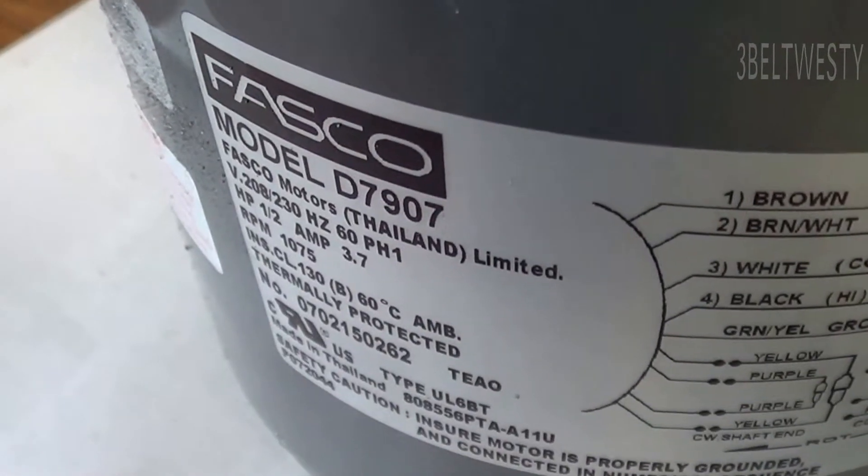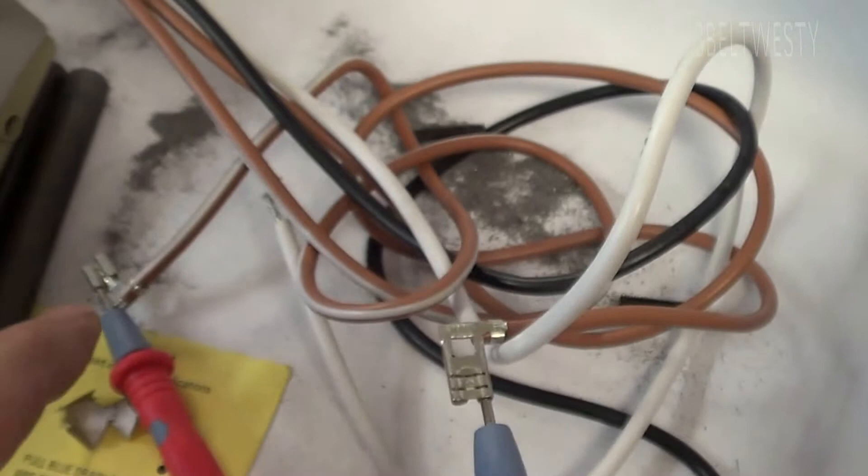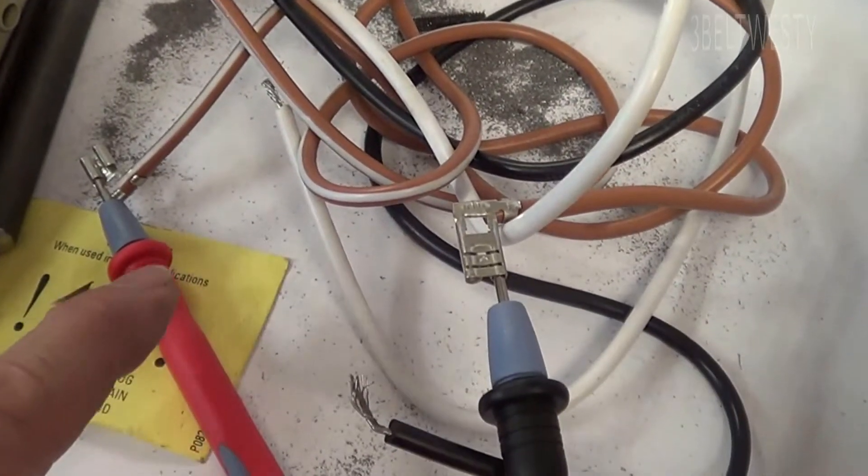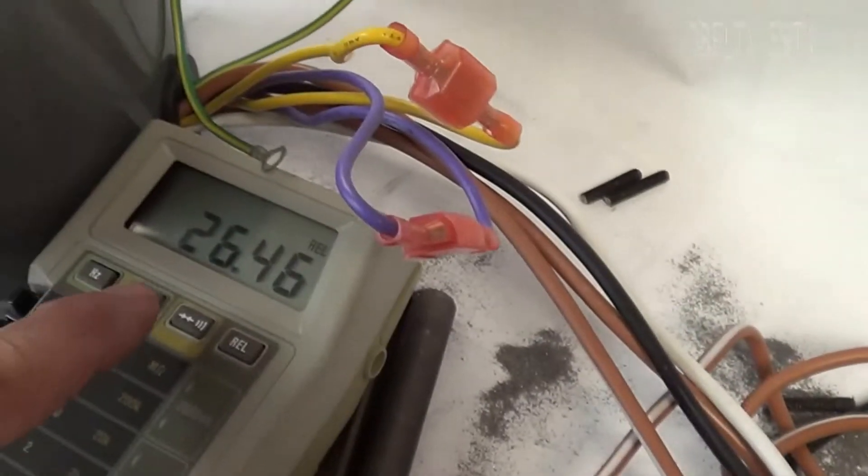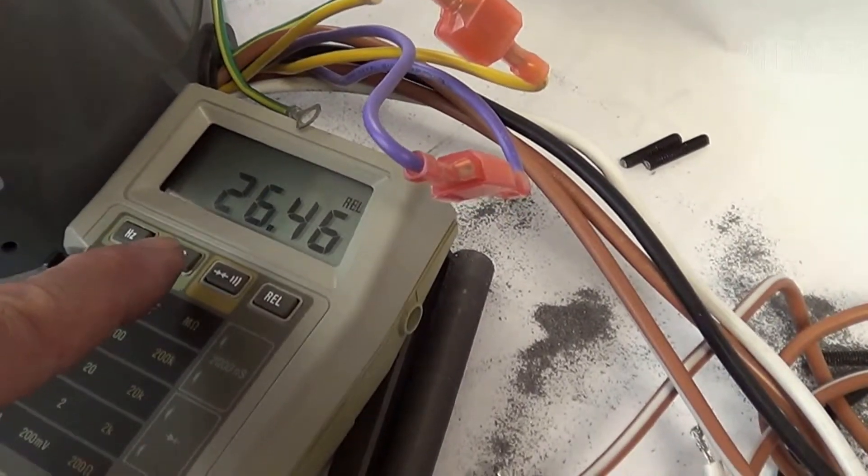Here's a Fasco D7907. Got an ohm meter across the two browns, about 26 ohms, and I've zeroed out the leads.